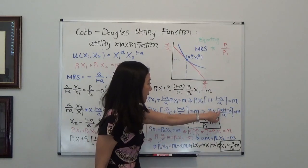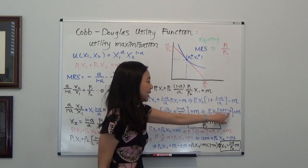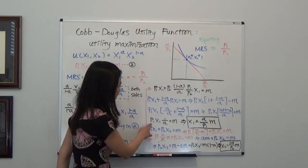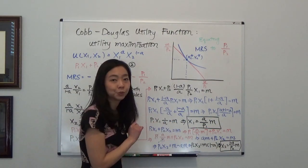So in the numerator, I have a plus 1 minus a. And that two term crosses out. And you're left with p1x1 times 1 over a is equal to m.